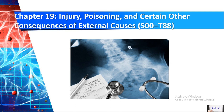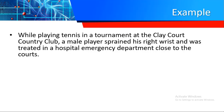Hello guys, welcome to our new module. Today we're discussing Chapter 19: Injury, Poisoning and Certain Other Consequences of External Causes — that is categories S00 to T88. This is quite a long guideline, so please bear with me and let me know if you have any questions, because there are guidelines that are quite confusing.